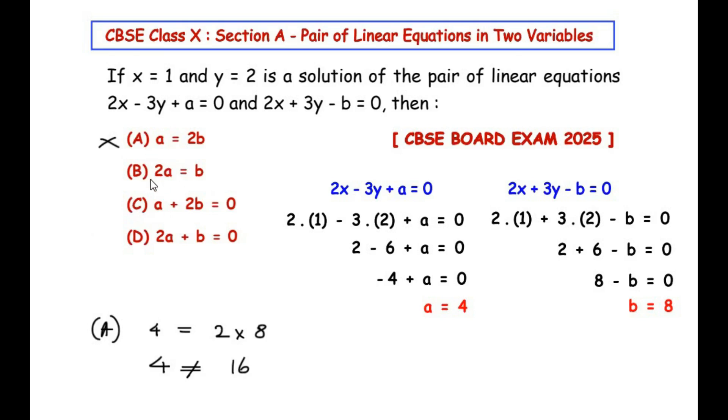Now let us do the same thing for option B. Under option B let us consider 2a, so it becomes 2 times the value of a is 4. Let us see if it is equal to b and b value is 8. So here 2 times 4 is 8 = 8. So left hand side is equal to right hand side which means the correct answer over here is option B.